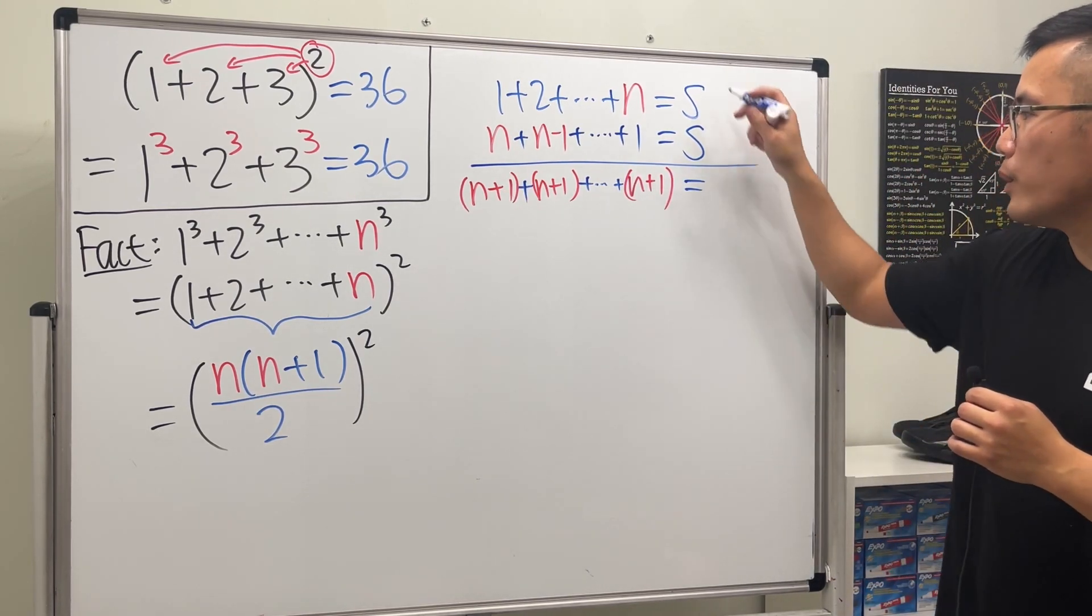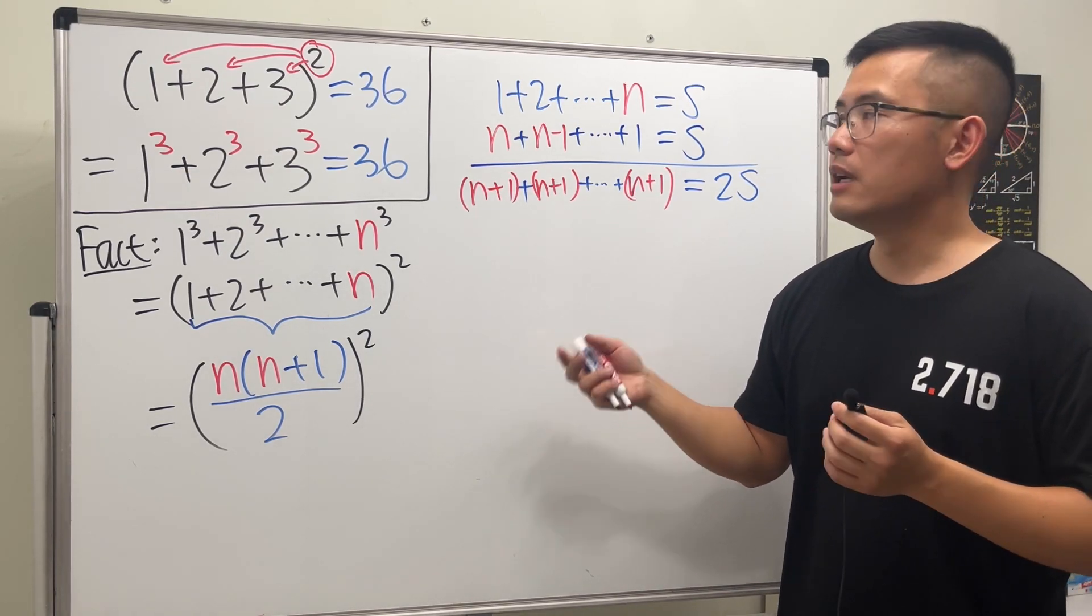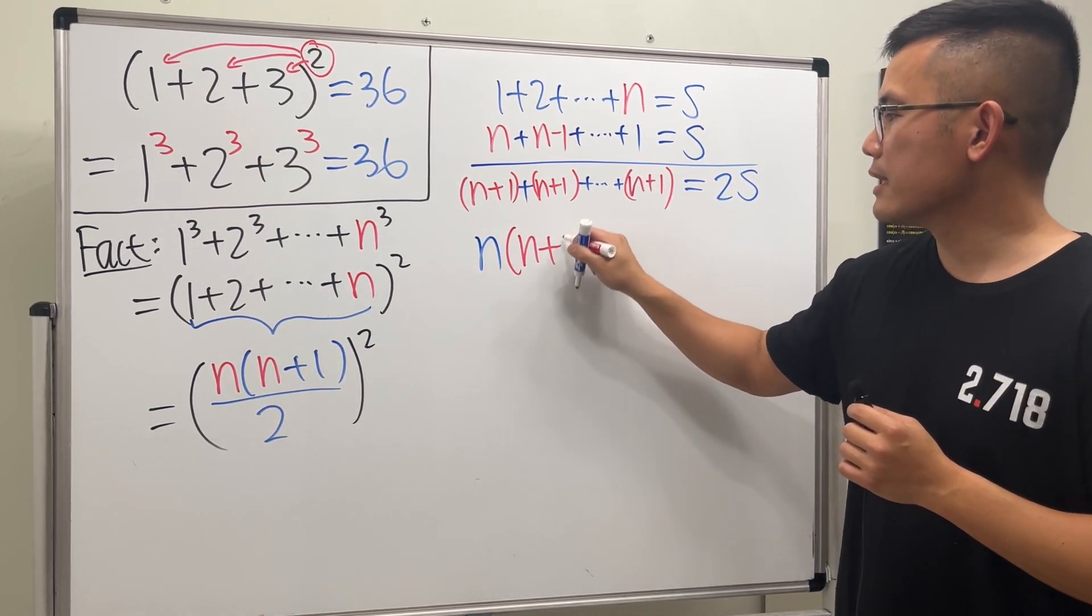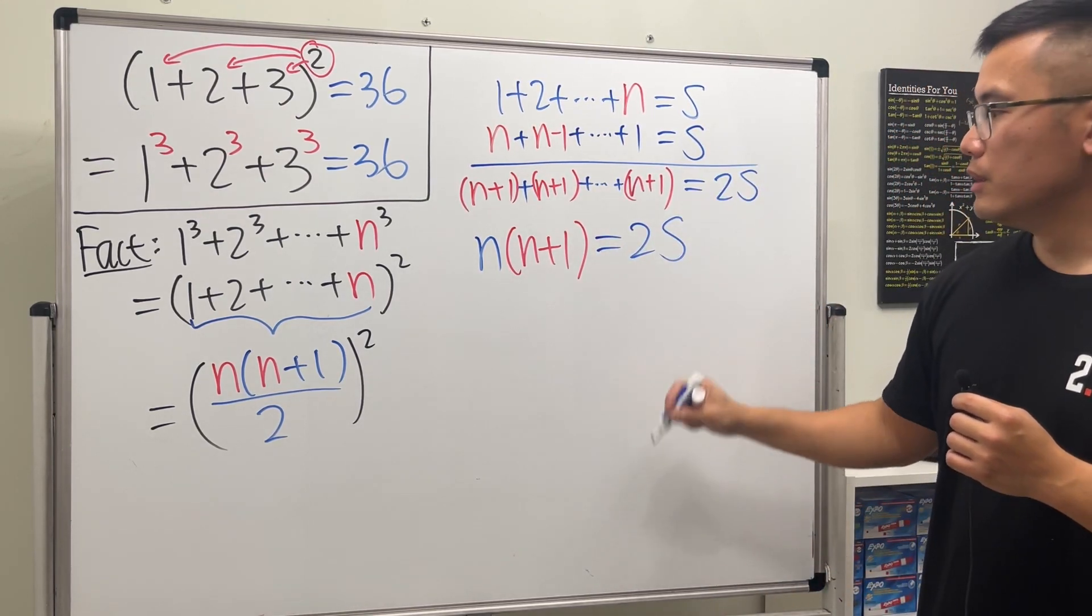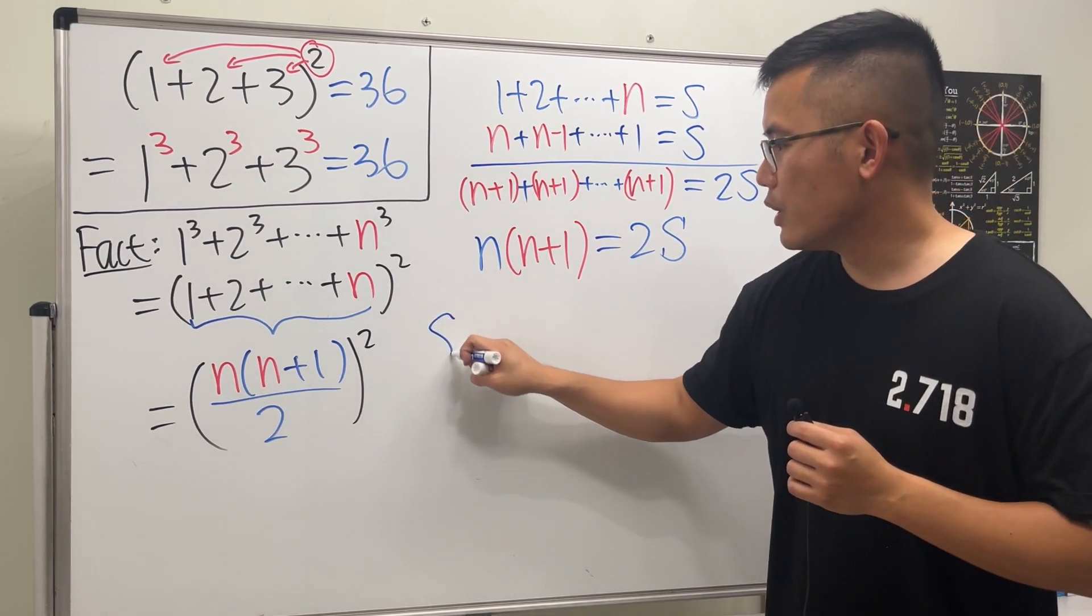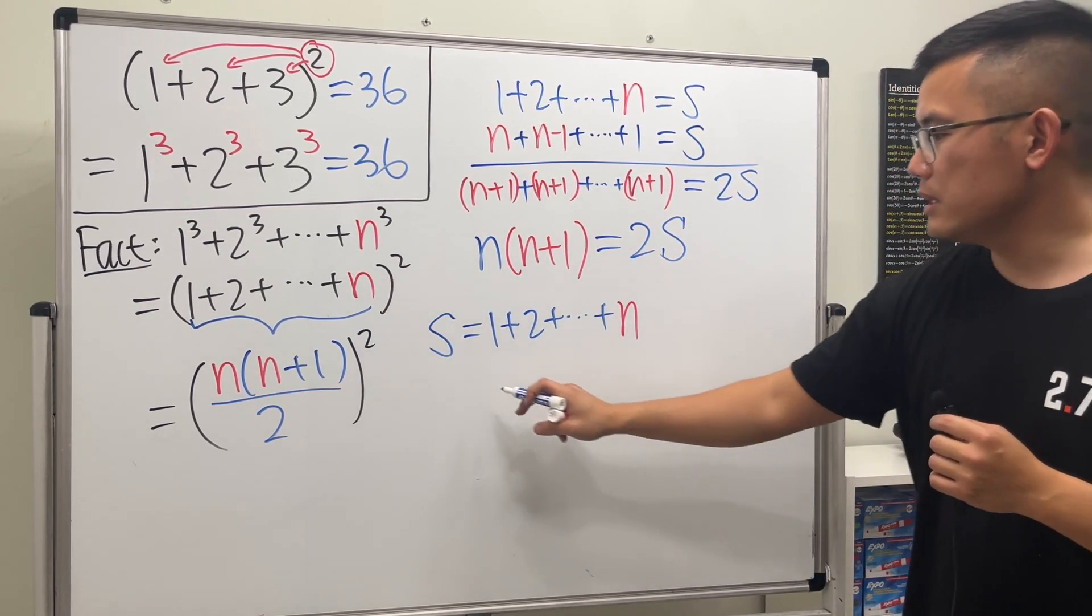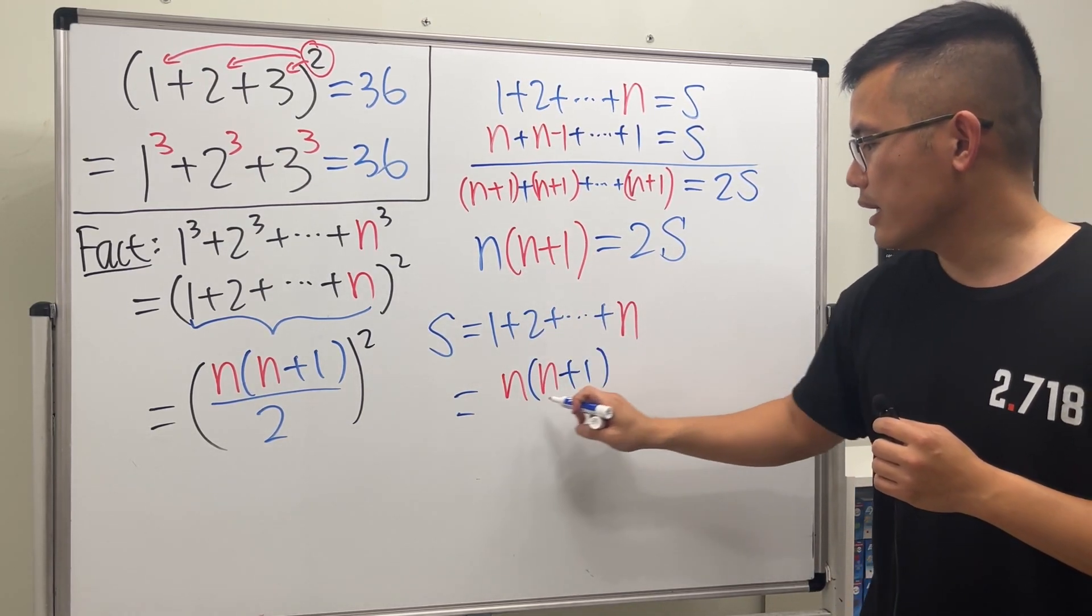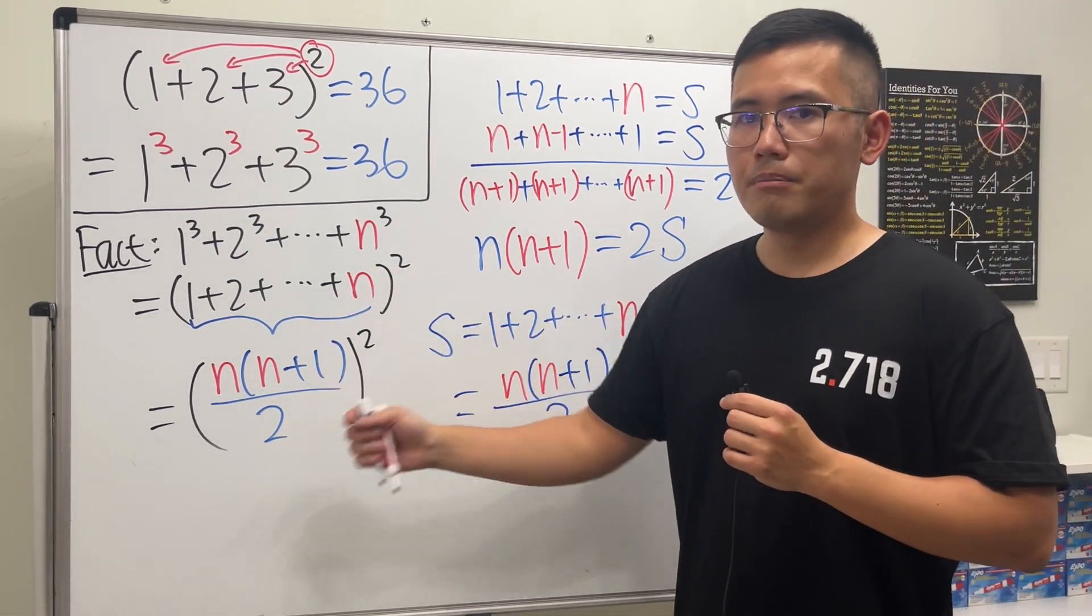Including the last number here as well, and when we added all of them we will end up with 2S. But how many n+1 do we have? The answer to that is a total of n of them. So the left-hand side is equal to n times (n+1), and we see the right-hand side is equal to 2S. Of course, we can just divide the 2 on both sides and we'll just get S, which is equal to 1 + 2 + ... + n. This right here is just equal to this, which is n times (n+1) divided by 2. That's what we said earlier.